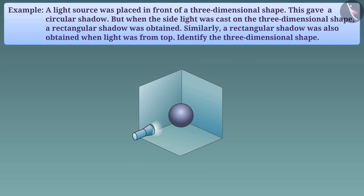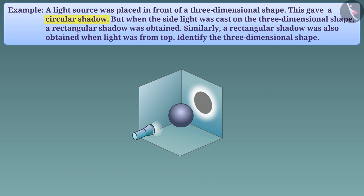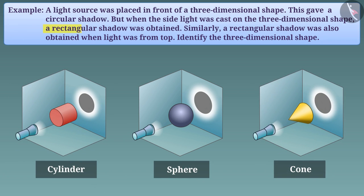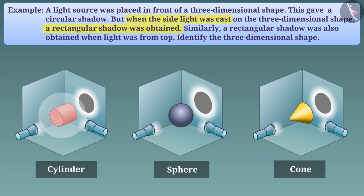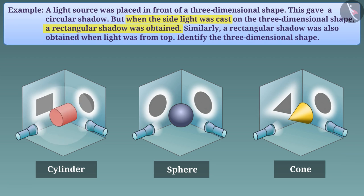When a light source is placed in front of a three-dimensional shape, we get a shadow, which is a 2D shape. A circular shadow from the front is possible when the shape is a sphere, cylinder, or cone. A rectangular shadow is obtained when the figure is lit from the side. Among a sphere, cylinder, or cone, only the cylinder forms a rectangular shadow from the side.